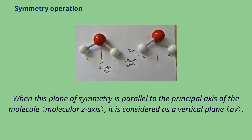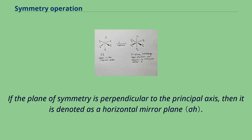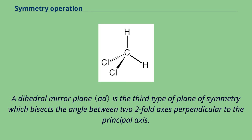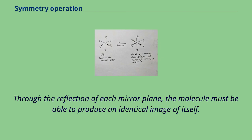When this plane of symmetry is parallel to the principal axis of the molecule, it is considered as a vertical plane. If the plane of symmetry is perpendicular to the principal axis, then it is denoted as a horizontal mirror plane. A dihedral mirror plane is the third type of plane of symmetry which bisects the angle between two two-fold axes perpendicular to the principal axis. Through the reflection of each mirror plane, the molecule must be able to produce an identical image of itself.